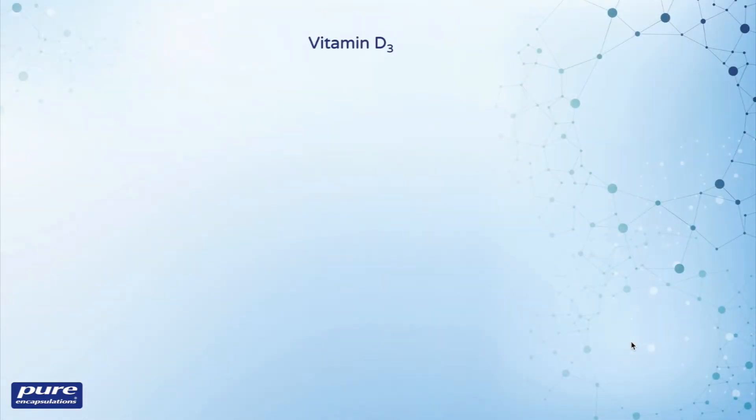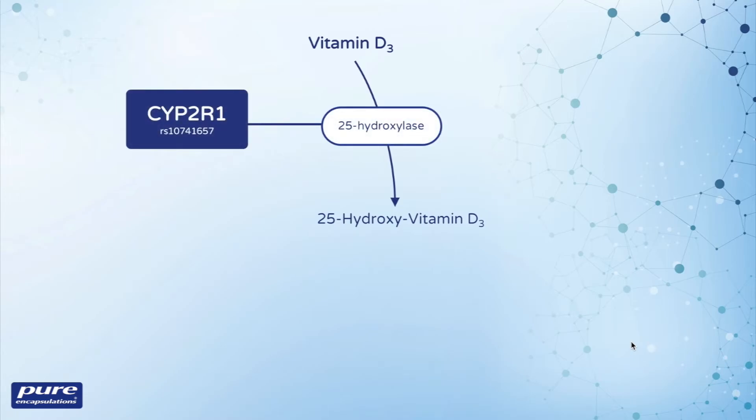Vitamin D requires activation to the major circulating form known as 25-hydroxyvitamin D3. This is catalyzed by the 25-hydroxylase enzyme encoded by the CYP2R1 gene. A polymorphism in this gene may slow this activation step.